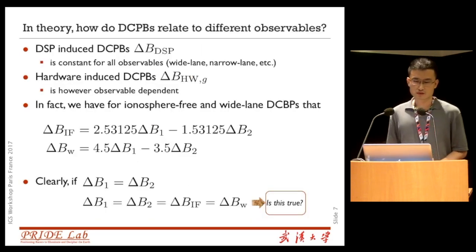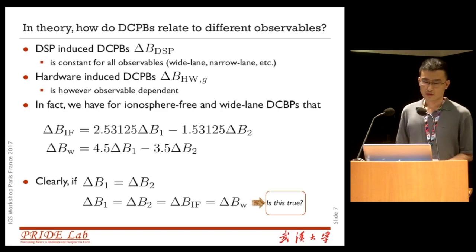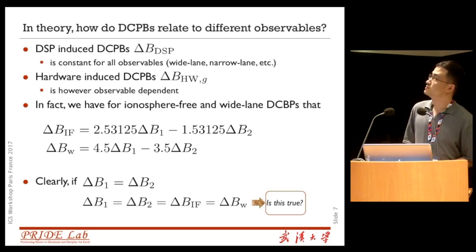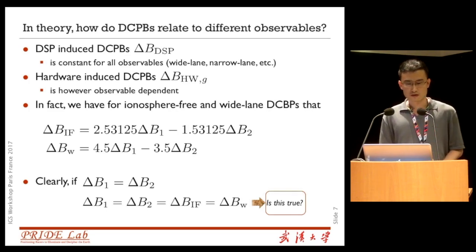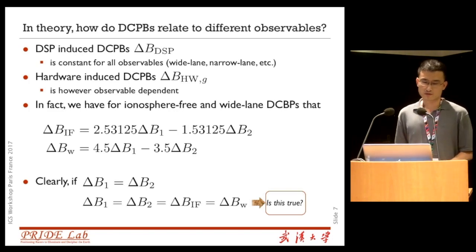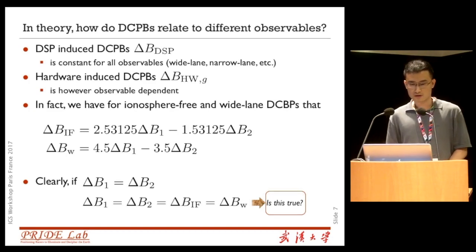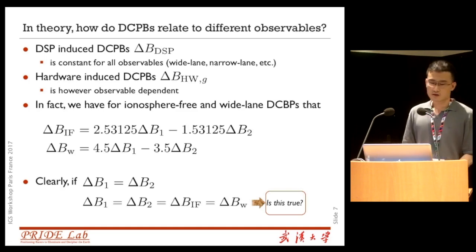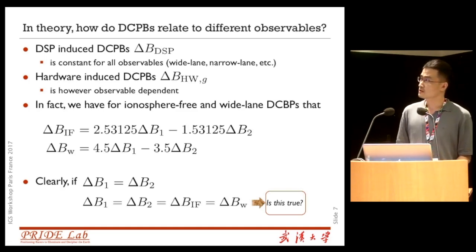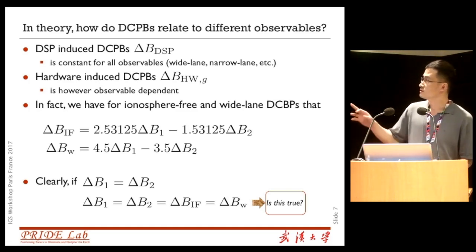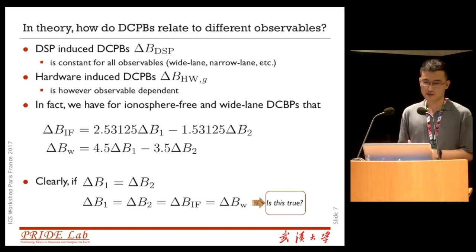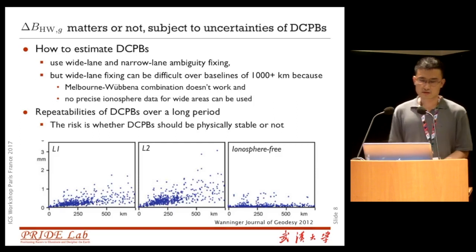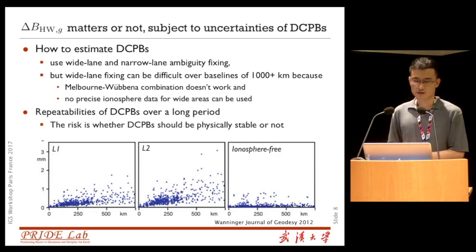In theory, how does DCPB relate to different observables? According to previous studies, DSP-induced DCPB is constant for all observables, for example wide-lane and narrow-lane, but hardware-induced DCPB is observable dependent. We can derive formulas for the ionosphere-free and wide-lane combination DCPB. Clearly, if L1 and L2 have the same DCPB, then the ionosphere-free and wide-lane DCPB also have the same value. But whether the hardware-induced DCPB matters is subject to the uncertainties of DCPB estimates.